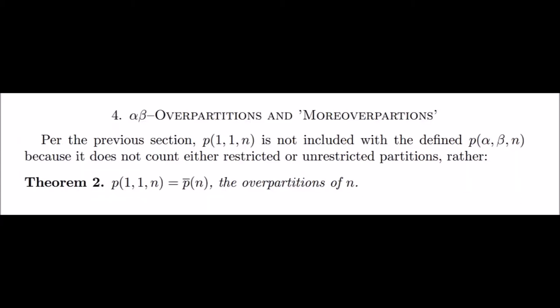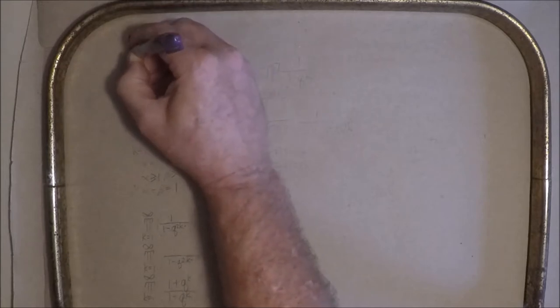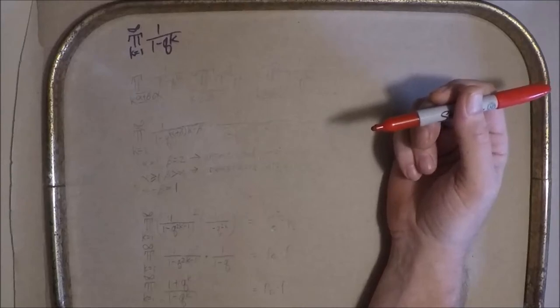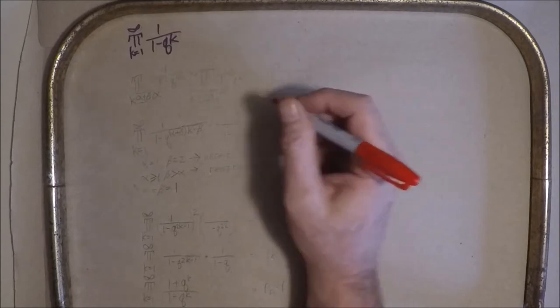As for over partitions, let's take a closer look. Starting with our expression for unrestricted partitions. This is easily split into three product components within our generalization.